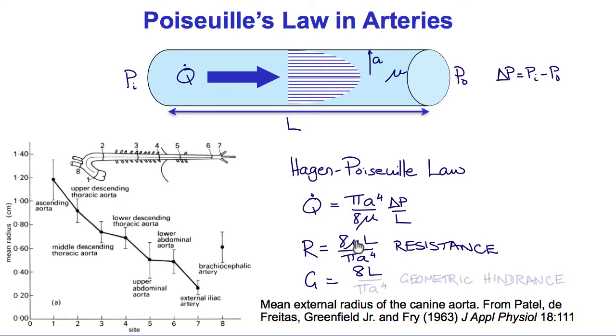Factoring out the viscosity to leave just the geometric quantities, we get 8L over pi a to the fourth. And this is called the geometric hindrance, being the geometric determinants of the flow resistance.